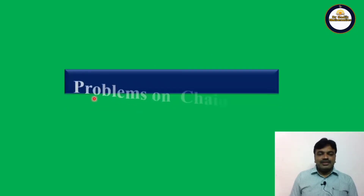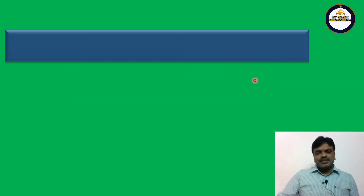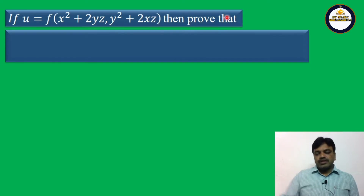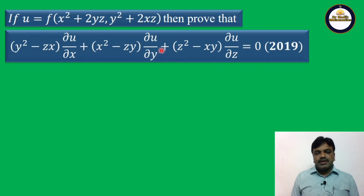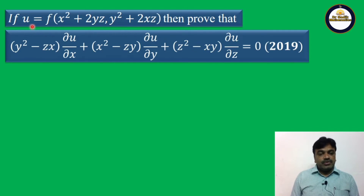Today we discuss problems on chain rule. The suitable method to prove this one is chain rule. I solved a problem of this type in a previous video. u is equal to f of r comma s, where r and s are functions of x, y, z — three variables. The suitable method is chain rule.